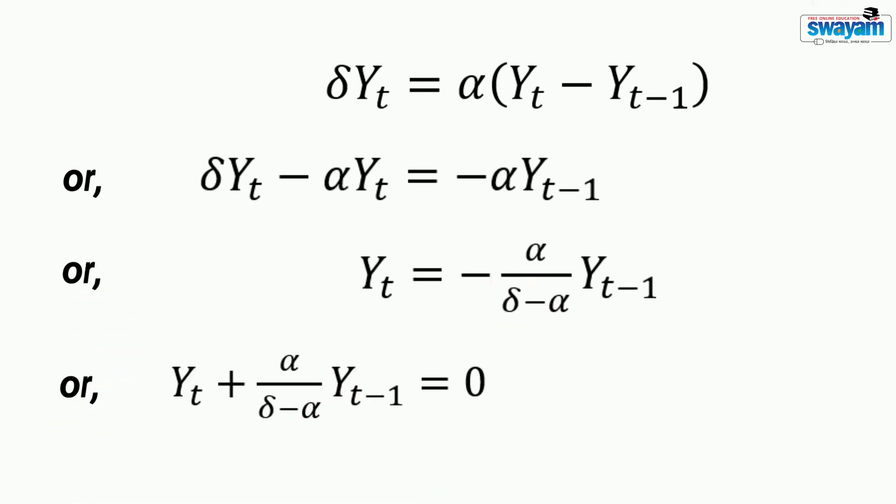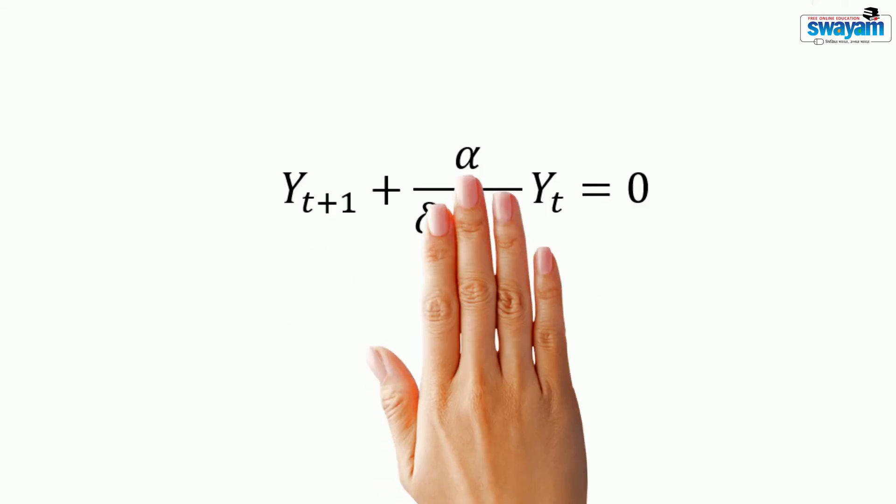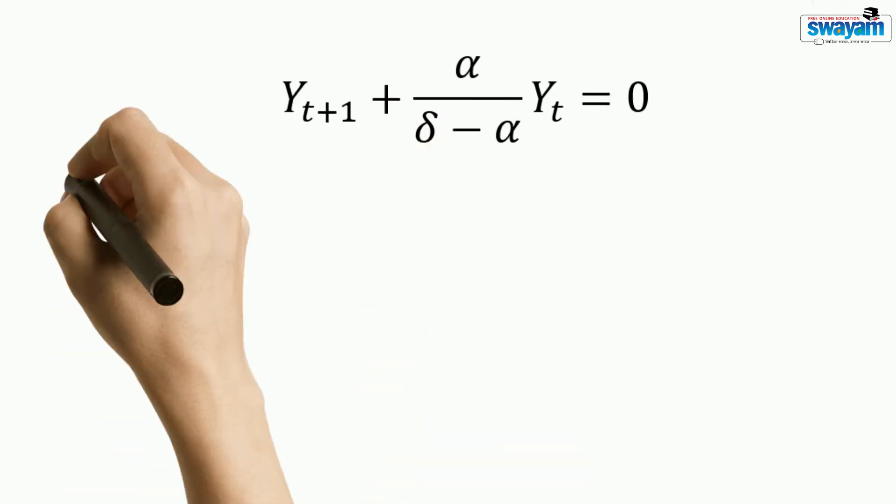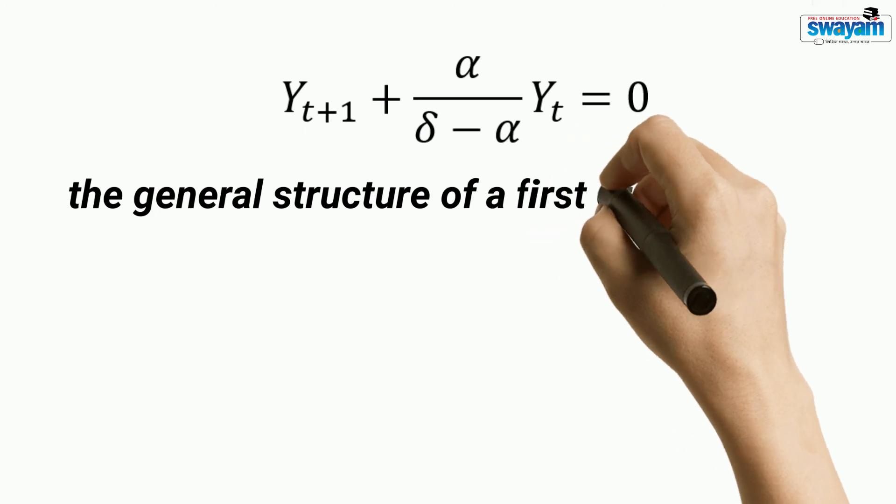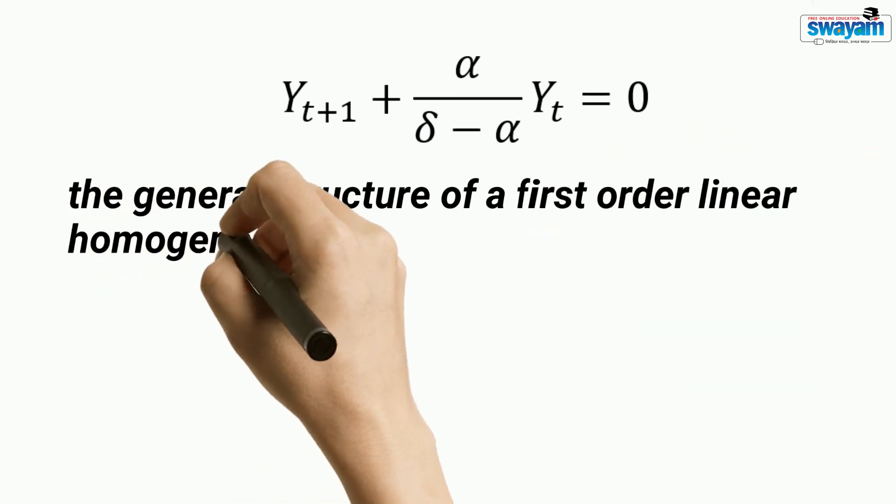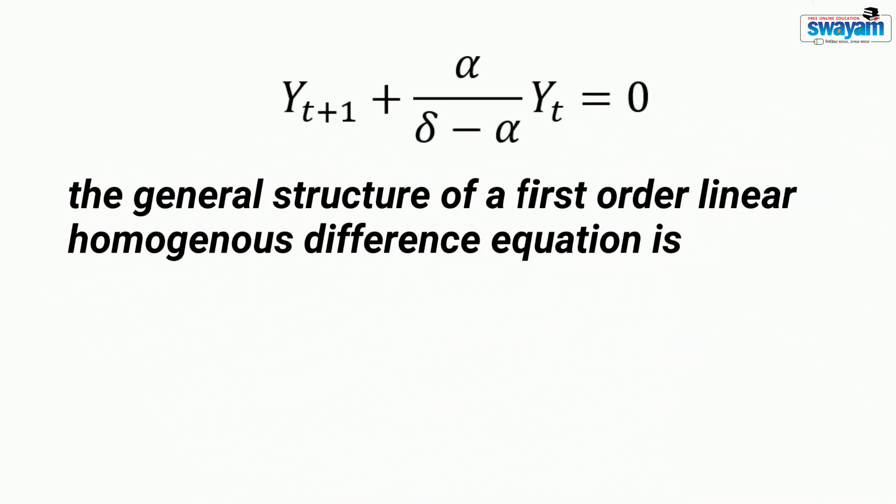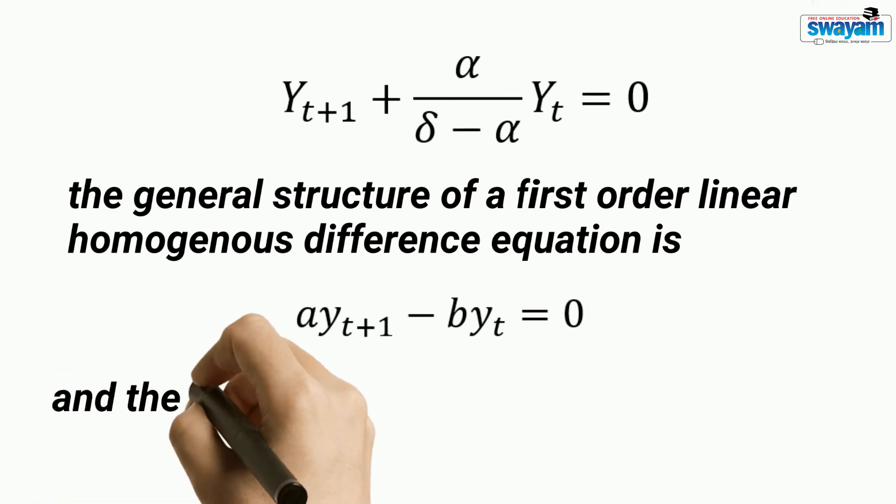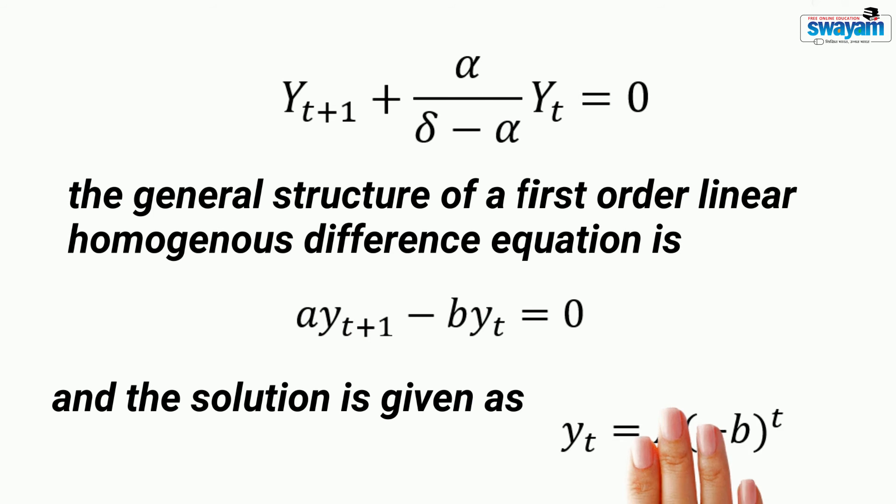Do you recognize this equation? Yes. This is a first order linear difference homogenous equation. If we find YT plus 1, we get this result. If you can recall, the general structure of a first order linear homogenous difference equation is of this form. And this is the solution.